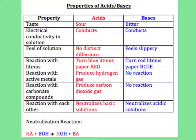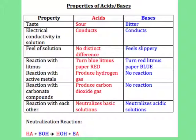We're talking about reactions with particular compounds. With active metals — generally Group 1 and Group 2 metals — acids will produce hydrogen gas, whereas bases don't react with those metals. Carbonate compounds reacting with acids will produce carbon dioxide gas as part of the neutralization reaction, whereas bases don't react at all with carbonate compounds.